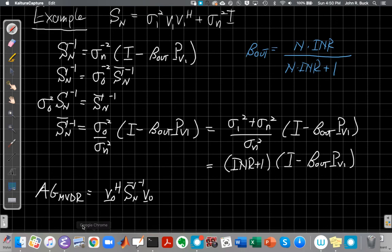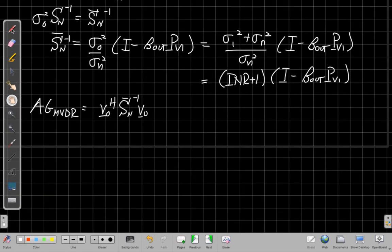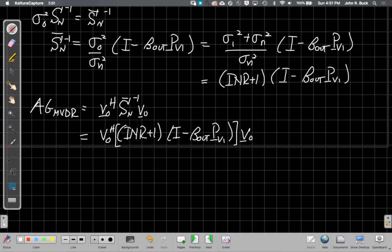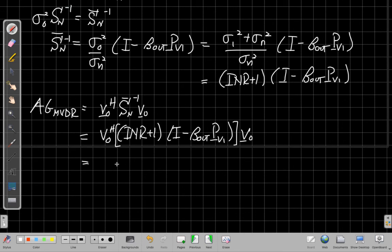Alright, so rewriting the formula, we get our MBDR formula looks like this. And now I'm going to put the expression we just found in the middle for S n inverse and see what we get. Let me move things up a little bit to give myself some space to work. So I get that when I substitute in, and now I can see, well, that this INR plus 1 is a term I can bring out front. So I get INR plus 1 out front, and then this becomes v naught Hermitian v naught. Well, that's magnitude of v naught squared minus the output beta times v naught Hermitian times the projection matrix for v1 times v naught.